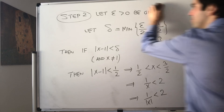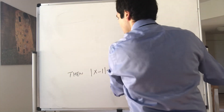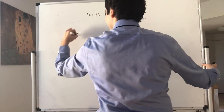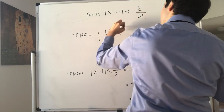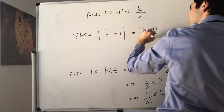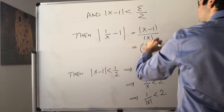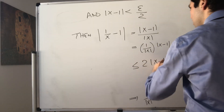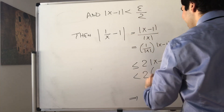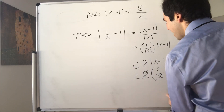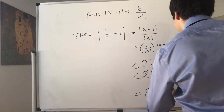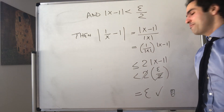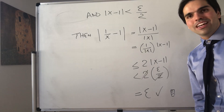Therefore, |1/x − 1| = |x − 1|/|x| = (1/|x|) · |x − 1| < 2 · |x − 1| < 2 · (epsilon/2) = epsilon. And therefore, the limit as x goes to 1 of 1/x is 1, and we're done. I hope you liked this — if you want to see more math, please subscribe to my channel. Thank you very much.